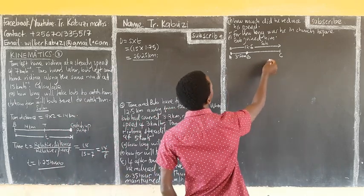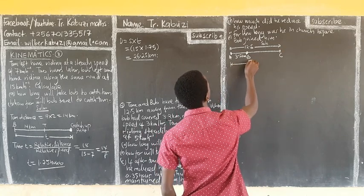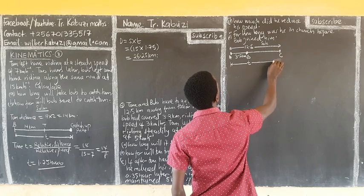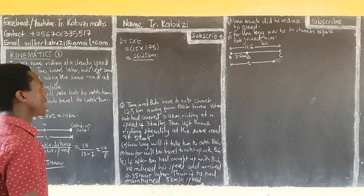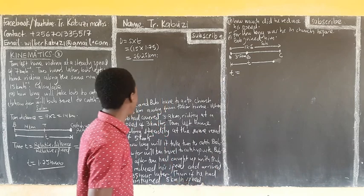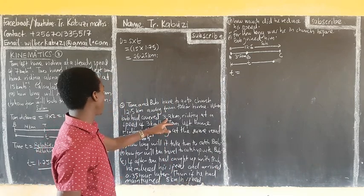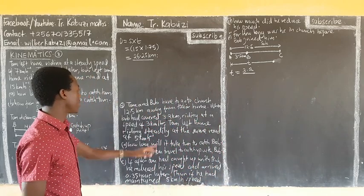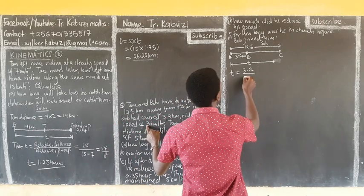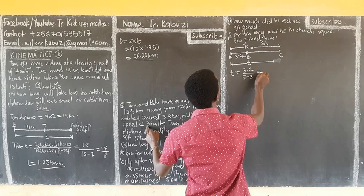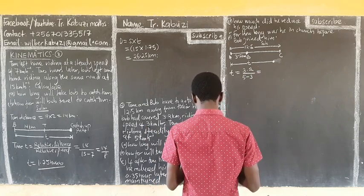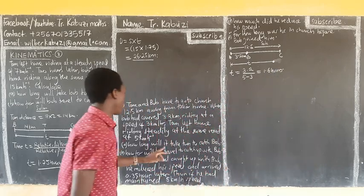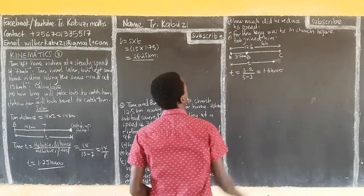Now, this time is found assuming they meet at some point — the cutting point. Our time is given by relative distance over relative speed. The relative distance between them is 3.2 km, over the difference in their speeds: Tom was travelling at 5 km per hour, Bob at 3 km per hour. So 5 minus 3 equals 2, and our time is 3.2 divided by 2, which is 1.6 hours. So it will take Tom 1.6 hours to catch up with Bob. This is our Part A.